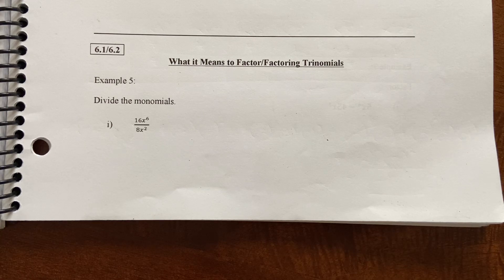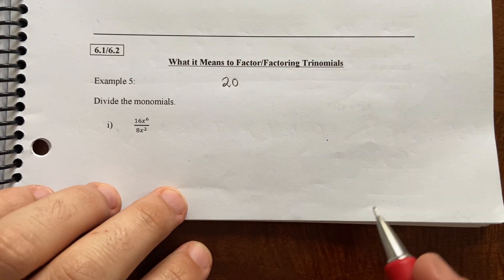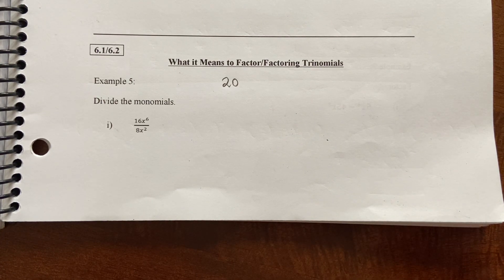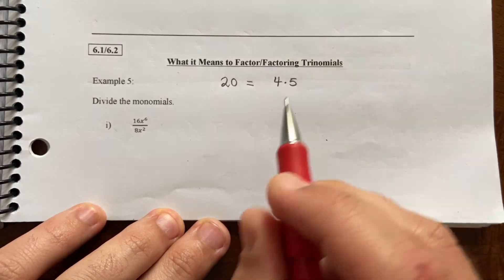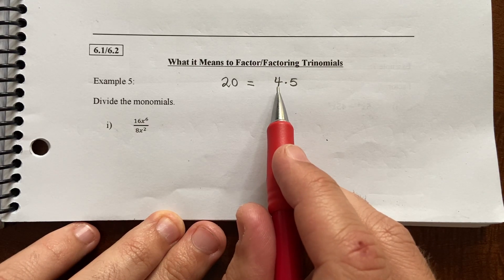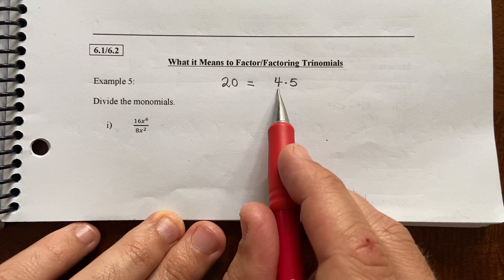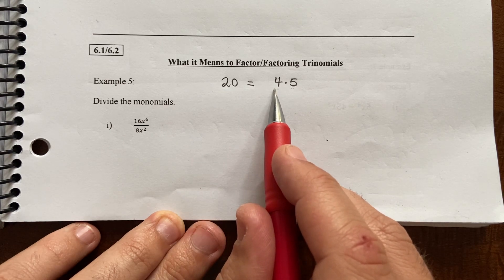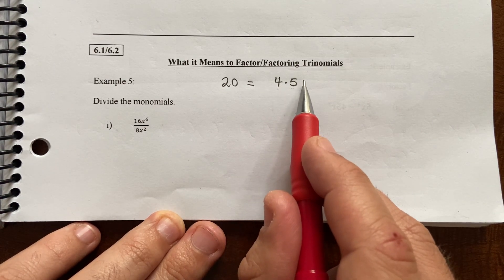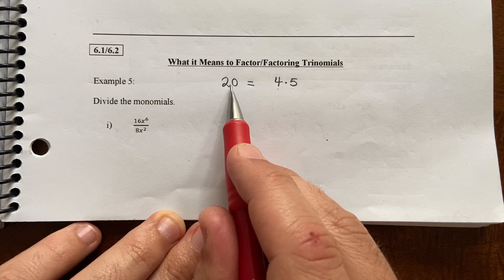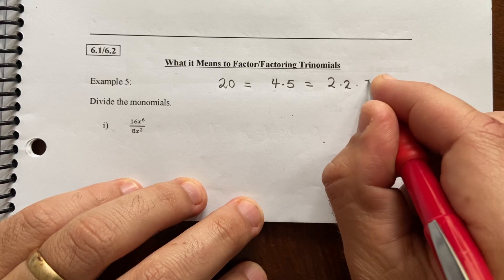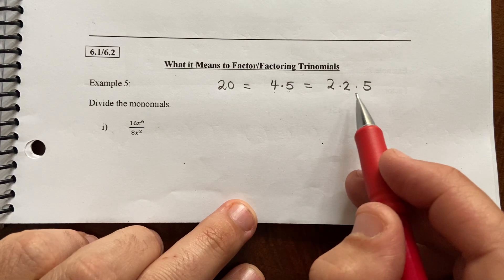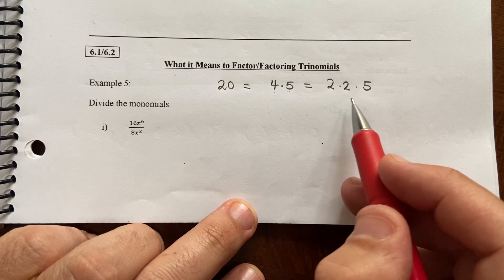What it means to factor — basically, factoring is unmultiplying. So if you think of a number like 20, 20 is fully expanded — it is not factored at all. But 20 would be the same as 4 times 5. And what I mean by unmultiplying is that 4 times 5 is the factored form of 20. You could also write 4 as 2 times 2, so 2 times 2 times 5 would be an even more factored version of the number 20.